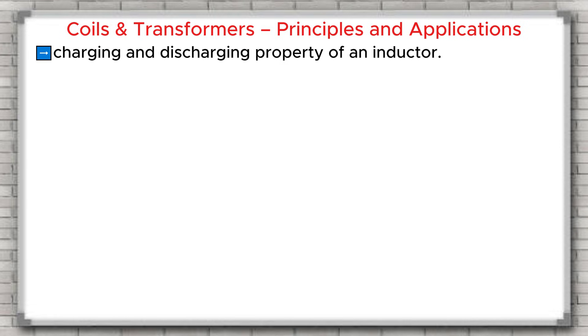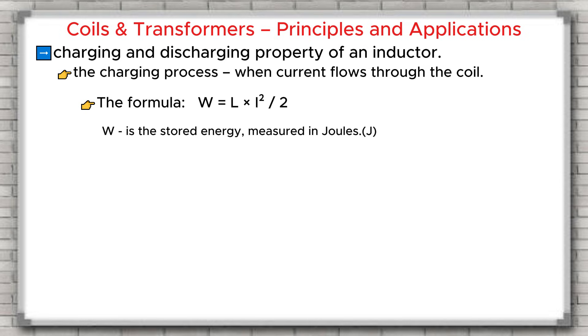Now, let's learn about the charging and discharging property of an inductor. First, the charging process, when current flows through the coil. When a current flows through the coil, a magnetic field is formed around it. The energy stored in the inductor is exactly the energy of this magnetic field. The formula for the stored energy is W equals L multiplied by I squared divided by 2, where W is the stored energy measured in joules, L is the inductance measured in Henry, I is the current. The meaning is: the larger the current, the more energy the coil stores in its magnetic field.